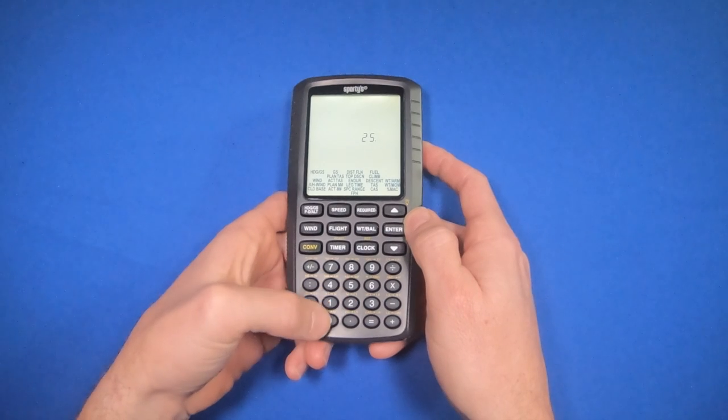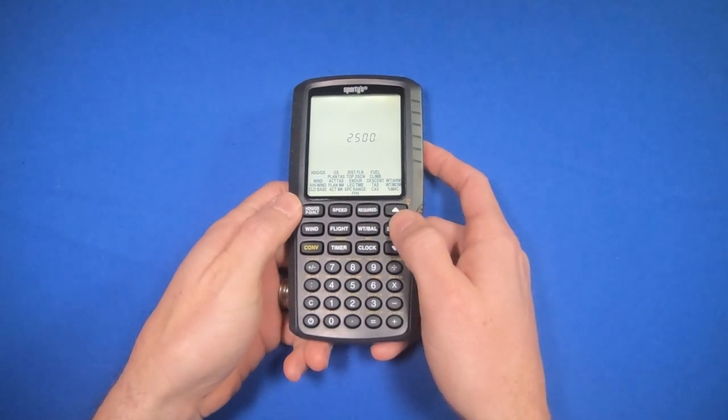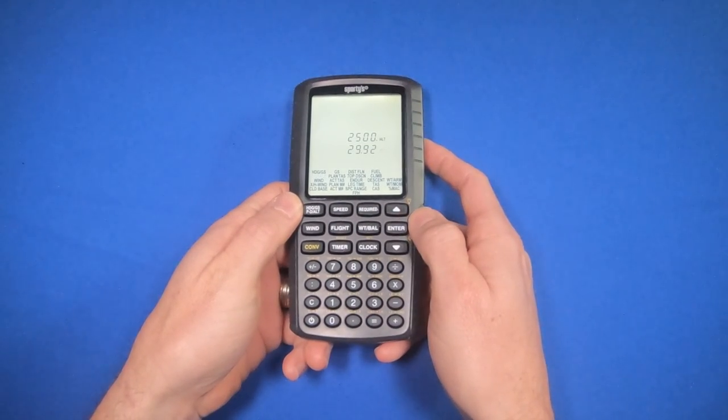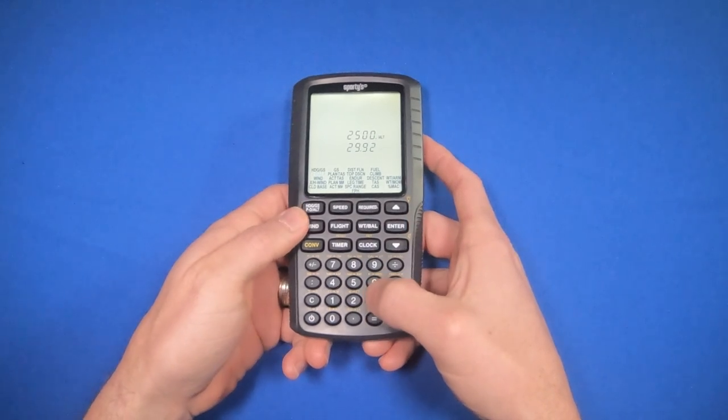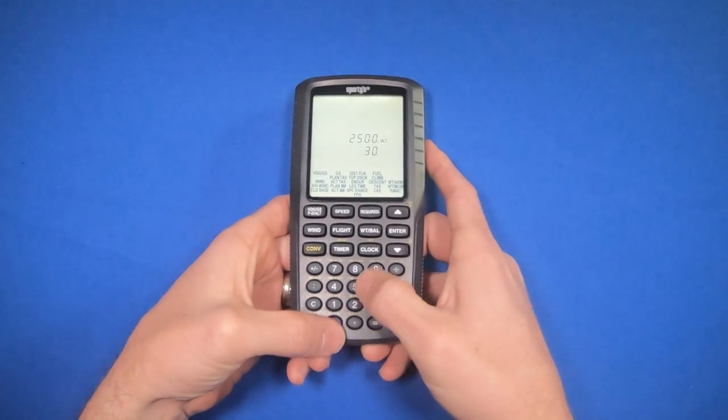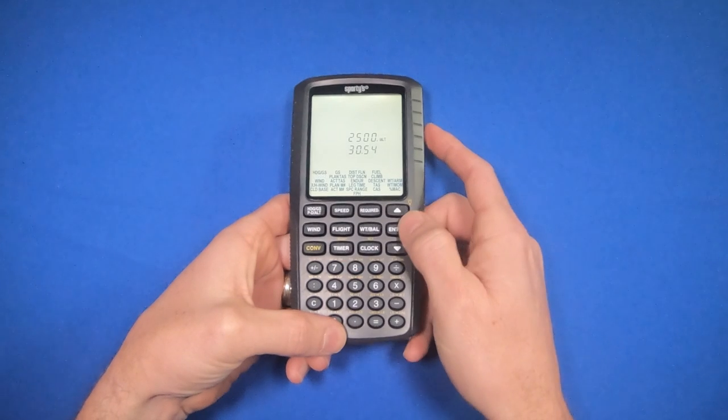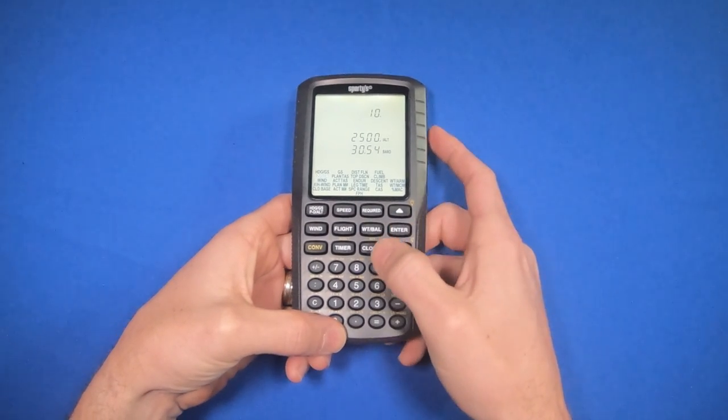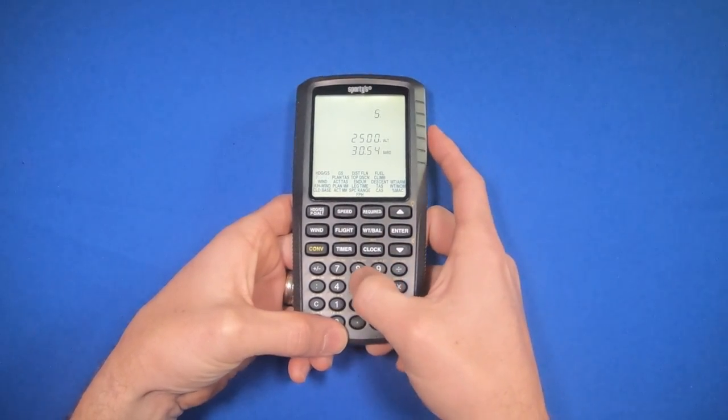Today I'm going to say I'm at 2,500 feet on my indicated altitude. There is a high pressure moving through, so we're going to put 30.54 for the barometric pressure. And then our temperature in degrees Celsius will be 5 degrees.